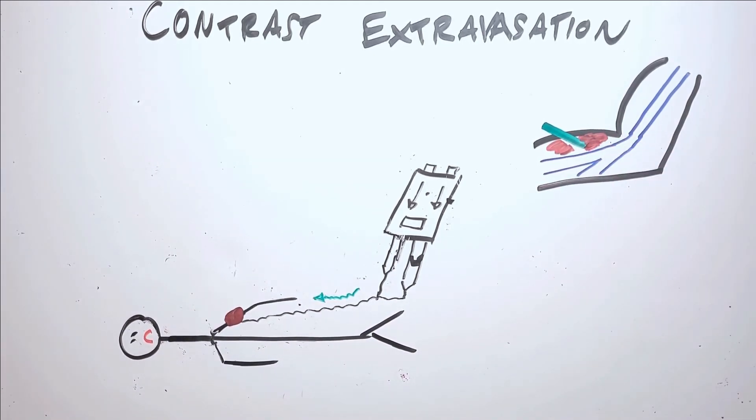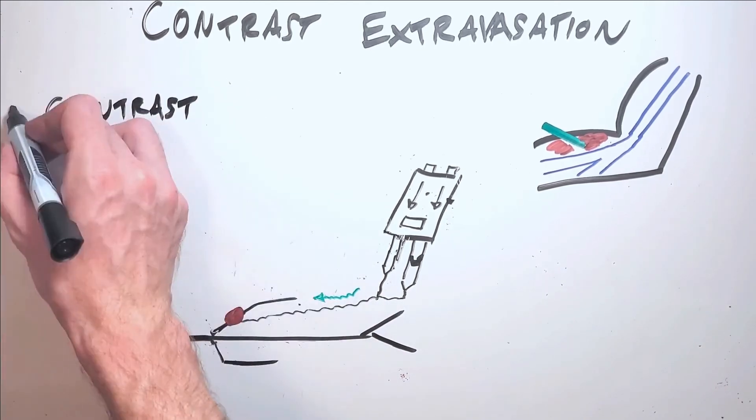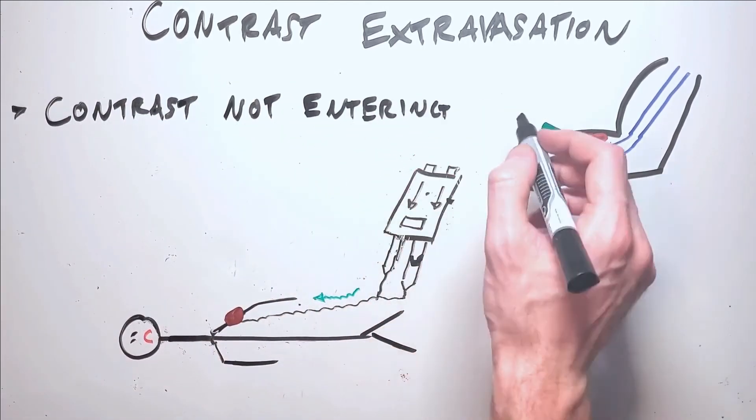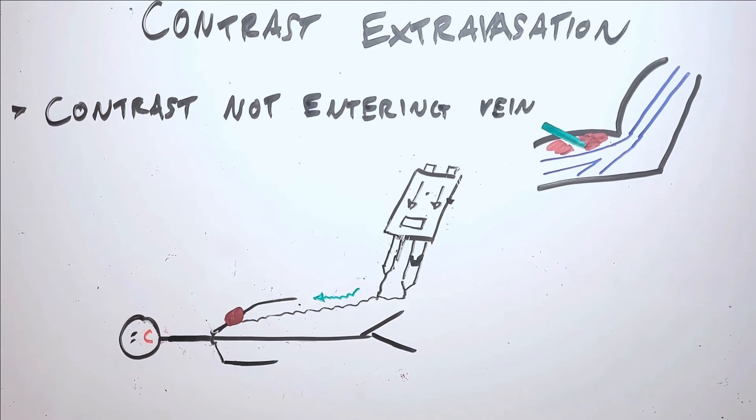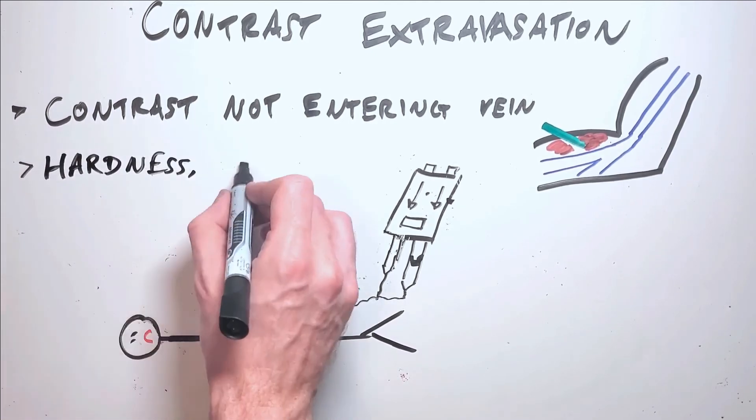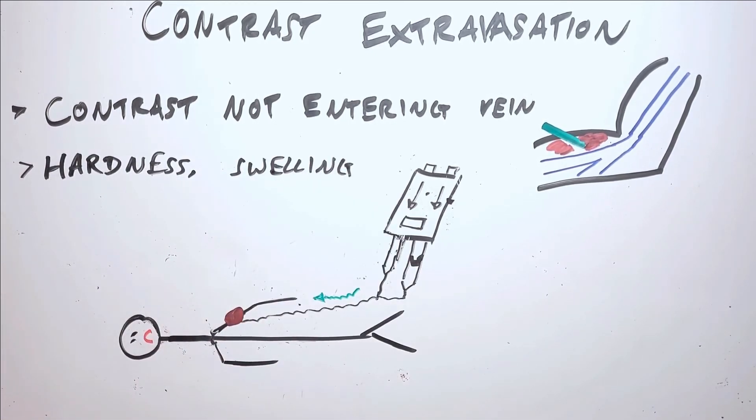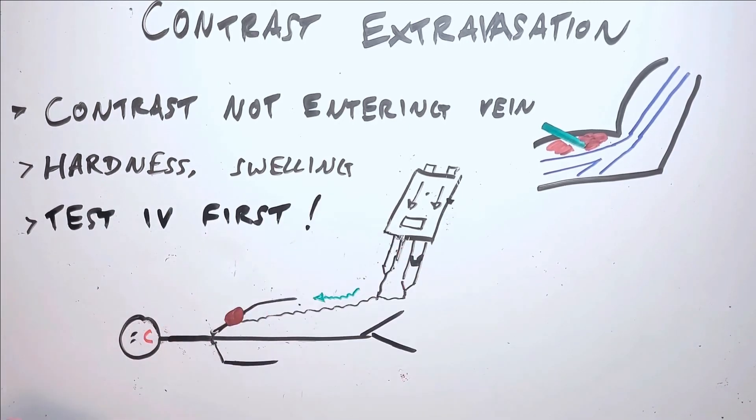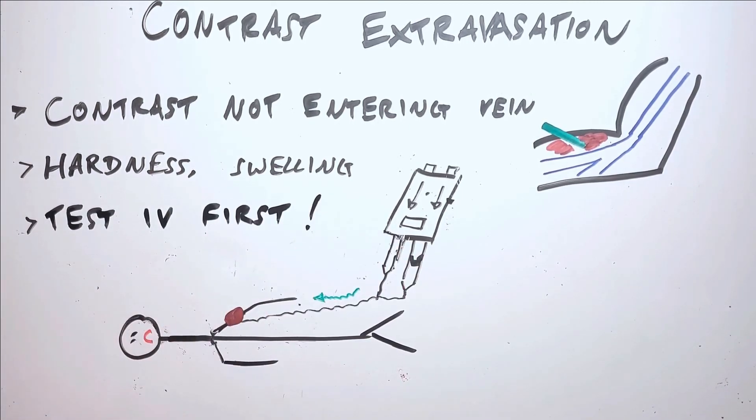In this scenario, the patient will almost always complain of pain at the IV site while or after the injection has happened, and there will be an obvious hardness under the skin at the site of injection. The technologist should always check that the IV is working and flushing properly with saline before injecting contrast to try to prevent this from happening.